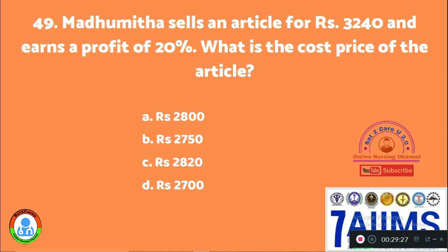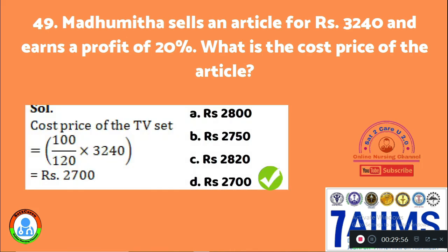Question 49: Madhumita sells an article for rupees 3,240 and earns a profit of 20%. What is the cost price of the article? Option A: 2800. Option B: 2750. Option C: 2820. Option D: 2700. The cost price equals 100/120 × 3240 = 2700. The right answer is rupees 2,700.